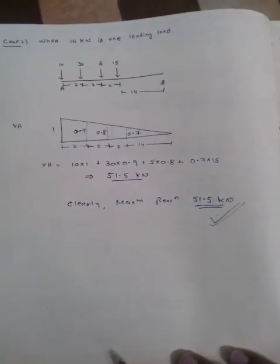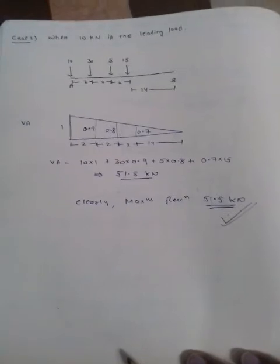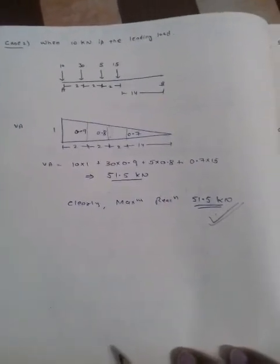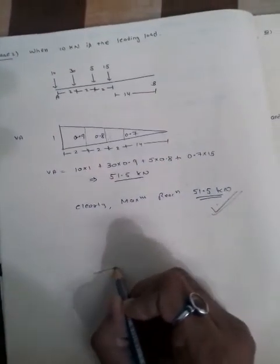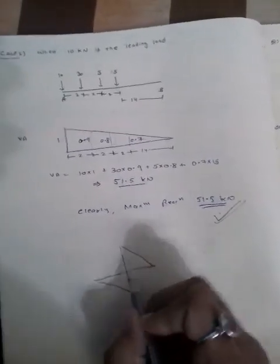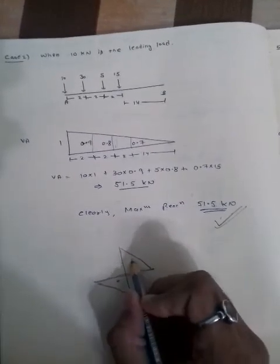In the next class, we will discuss the influence line diagram for shear force and bending moment. The basic ILD for shear force has a downward negative portion and an upper positive portion, calculated as a/l, where l is the total span length and a is the distance from the support.